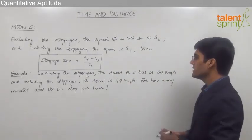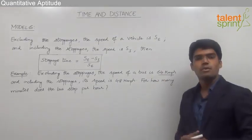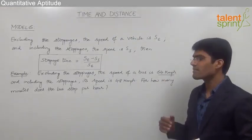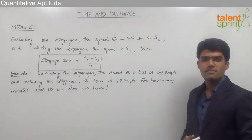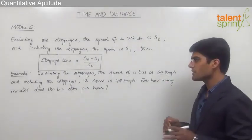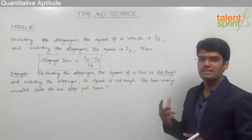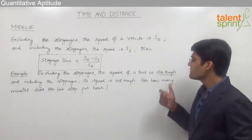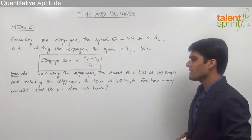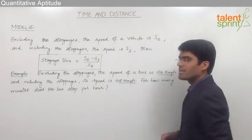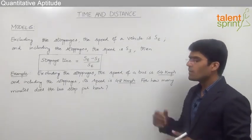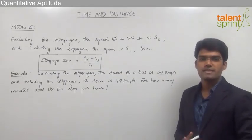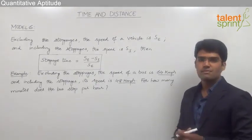As given in the question, excluding the stoppages, the speed is 64 kilometers per hour — meaning when the bus runs non-stop without stopping at any places, its average speed is 64 kilometers per hour. Including the stoppages, its speed is 48 kilometers per hour, meaning when the bus stops at different places, it can cover only 48 kilometers per hour on average.